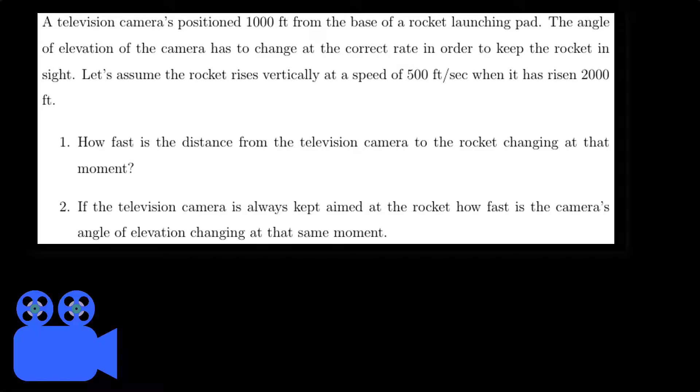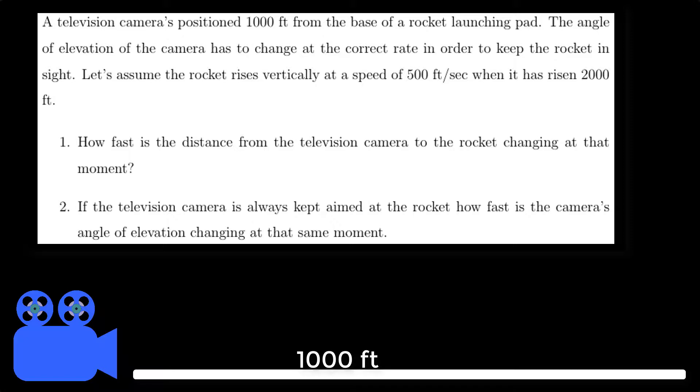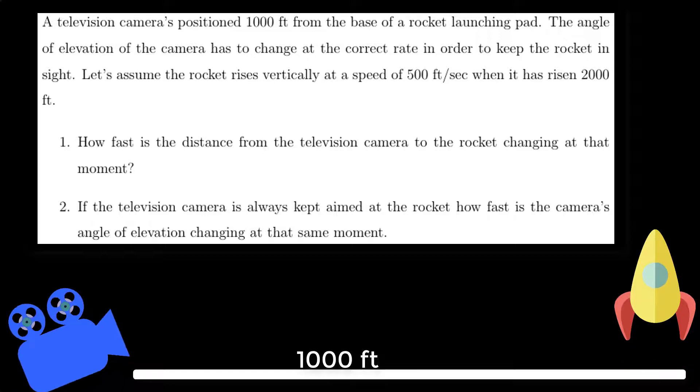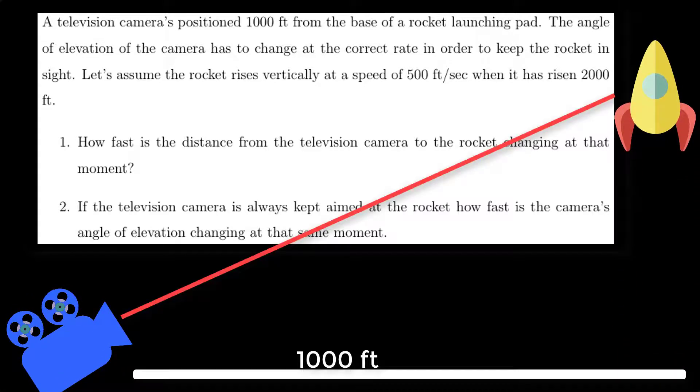So if you haven't seen part A, go check that out right now. All right, so without further ado, let me read the problem. A television camera is positioned 1,000 feet from the base of a rocket launching pad. The angle of elevation of the camera has to change at the correct time in order to keep the rocket ship in sight.